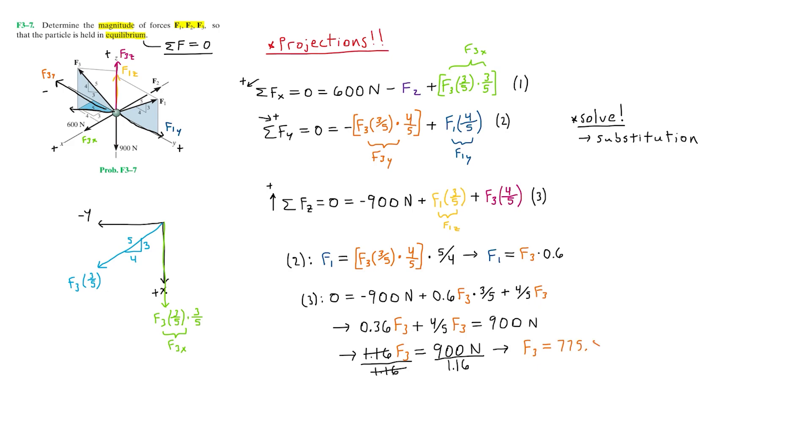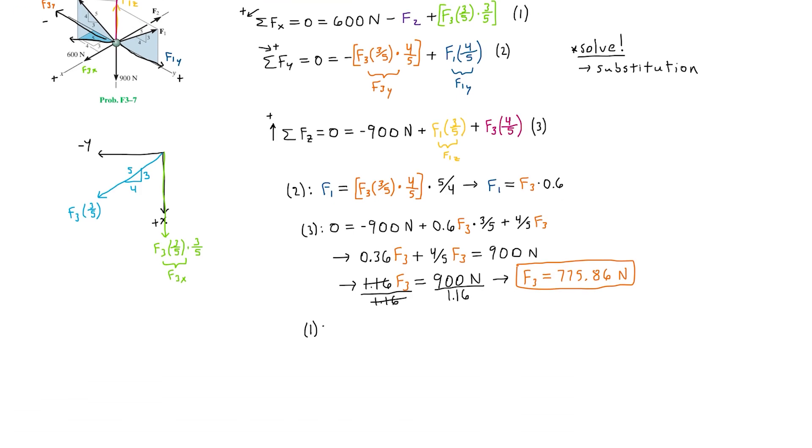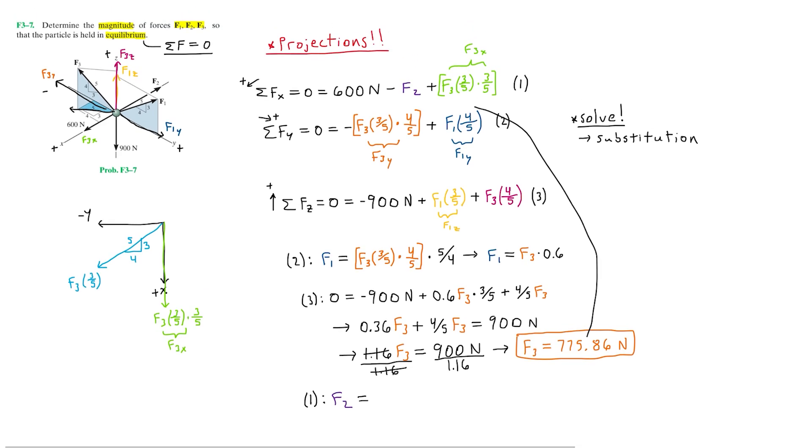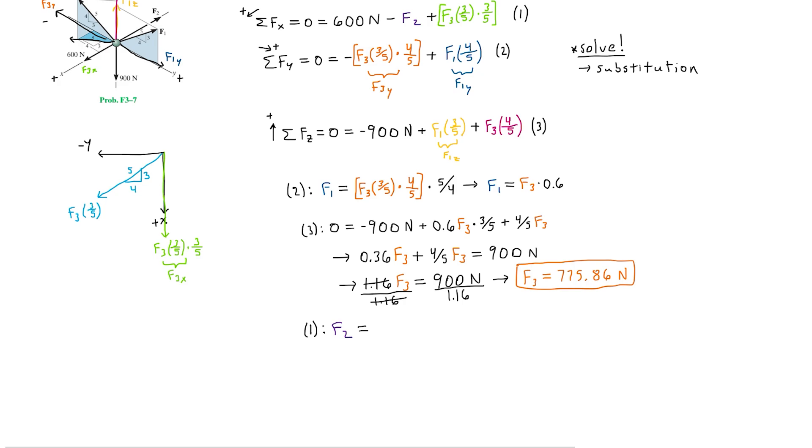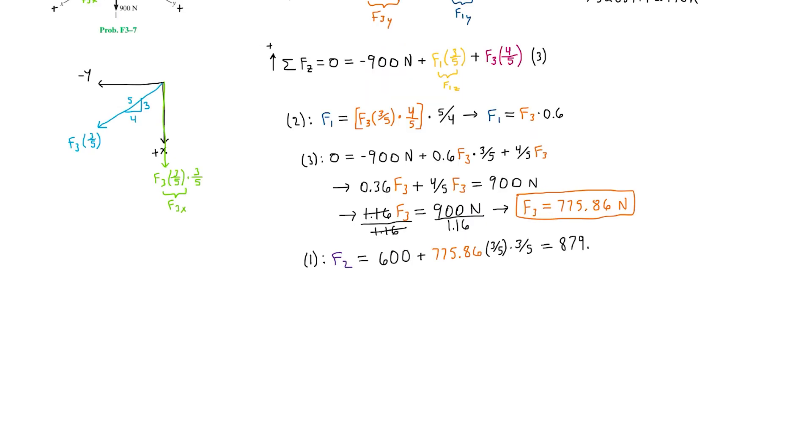So now we can use this F3 value to solve for F2 in equation one. Substituting in the 775 newtons into equation one and isolating F2, we get F2 equals 600 plus the 775.86 times the two three-fifths. So solving this in a calculator we get roughly 879.31. So hence the magnitude of force F2 is roughly 879.31 newtons.